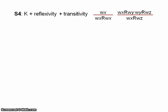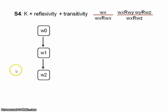So, what about S4, which is K plus reflexivity plus transitivity? Okay, well, again, let's say we take W1 accessible from W0, W2 accessible from W1. What can we derive about this tree? Well, first of all, all the worlds access themselves because we have reflexivity.